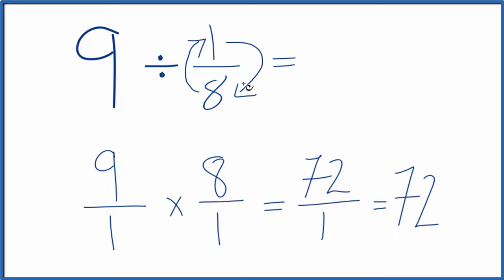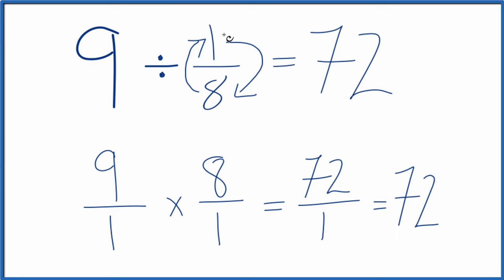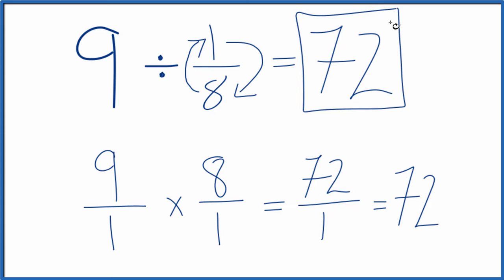So in answer to our question, 9 divided by 1/8 equals 72. If you took 72 and multiplied it by 1/8, you'd get 9 — so we did this correctly. This is Dr. B dividing 9 by 1/8. The answer is 72.